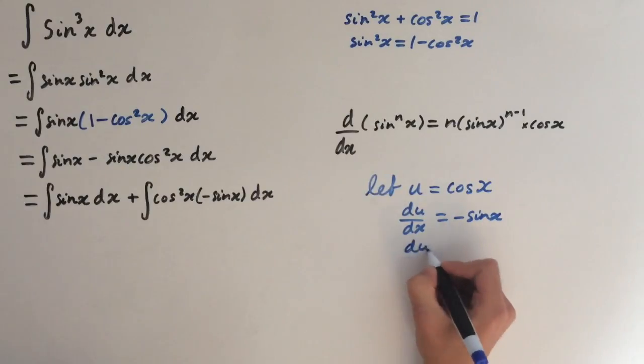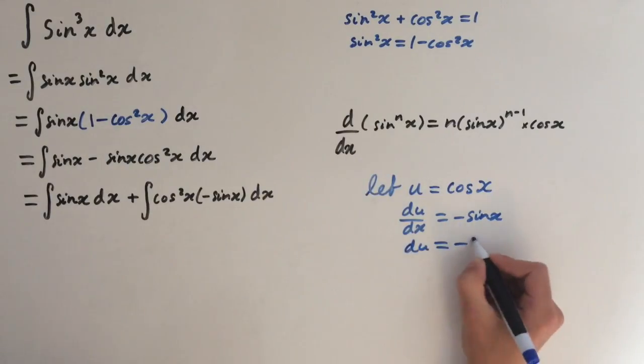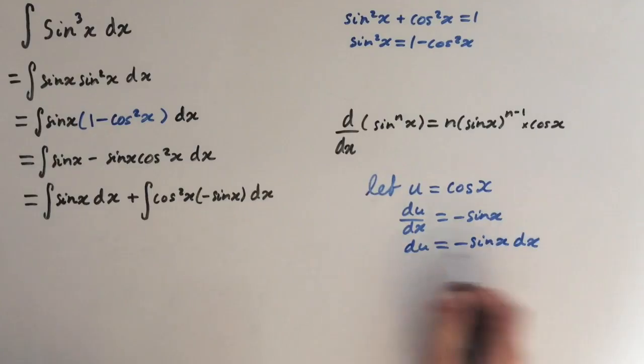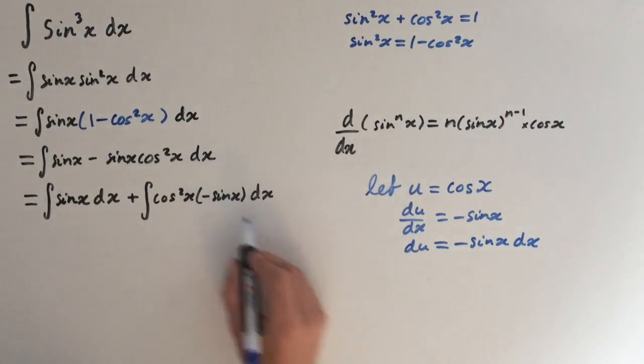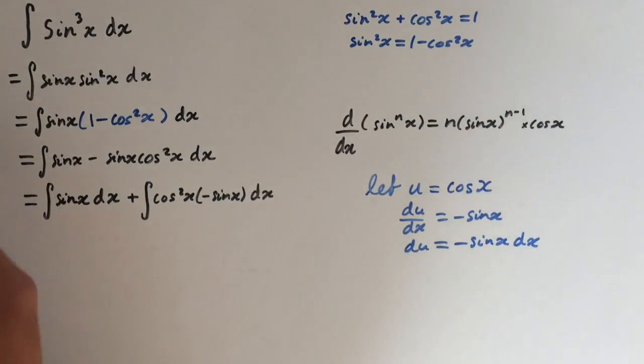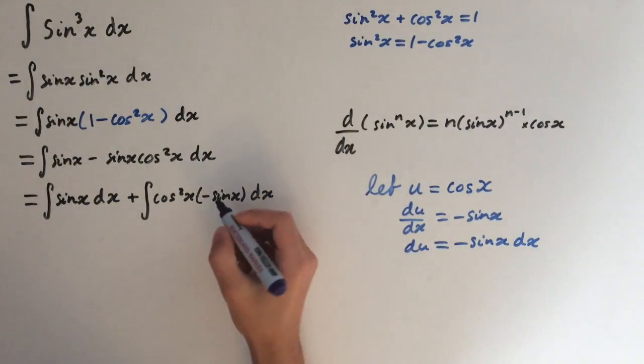So let's multiply by dx. This gives us minus sine of x dx and this is why I separated it like this because you can see now that we can just substitute this bit here.